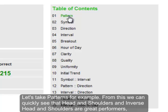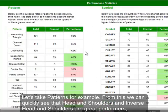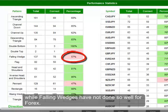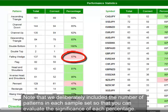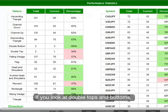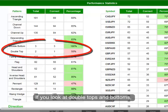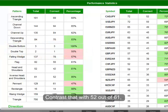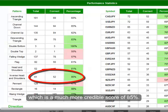Let's take patterns for example. From this we can quickly see that head and shoulders and inverse head and shoulders are great performers, while falling wedges have not done so well for Forex. Note that we deliberately included the number of patterns in each sample set so that you can evaluate the significance of each percentage. If you look at double tops and bottoms, the 100% is a score of 3 out of 3, and the 50% is 1 out of 2 — neither of these can be regarded with much confidence. Contrast that with 52 out of 61, which is a much more credible score of 85%.